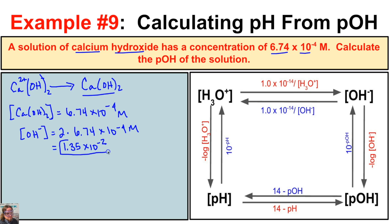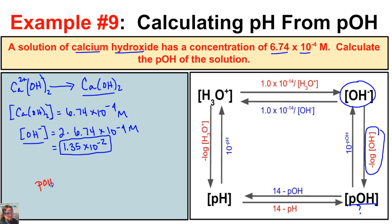That's the concentration of OH minus ions, but we're asked to calculate the pOH, so we take the negative log of our OH minus concentration — the negative log of 1.35 times 10 to the negative 2 — and we end up with a pOH equal to 1.87.